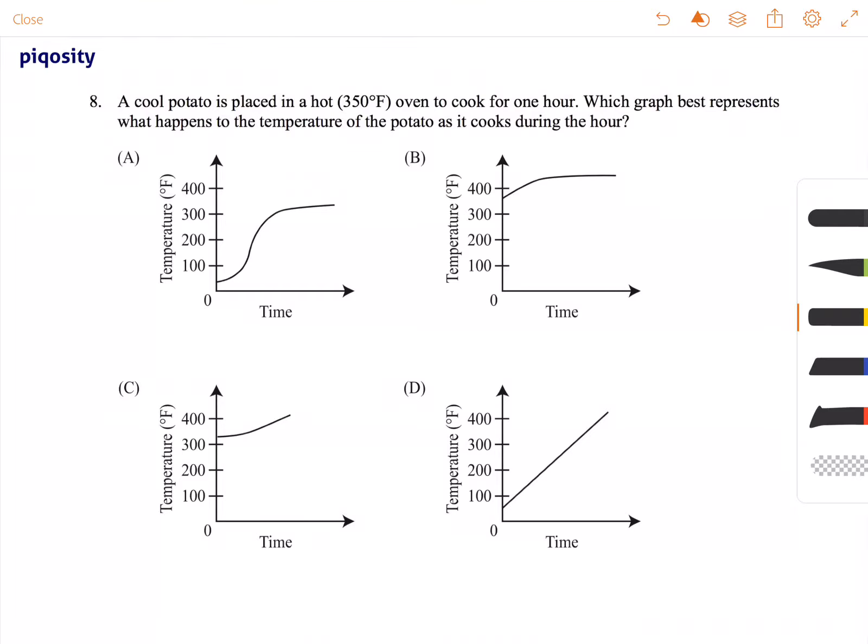This is Stephen and this question is testing whether or not you can read a graph. A cool potato is placed in a hot 350 degree Fahrenheit oven to cook for one hour. Which graph best represents what happens to the temperature of the potato as it cooks during the hour?